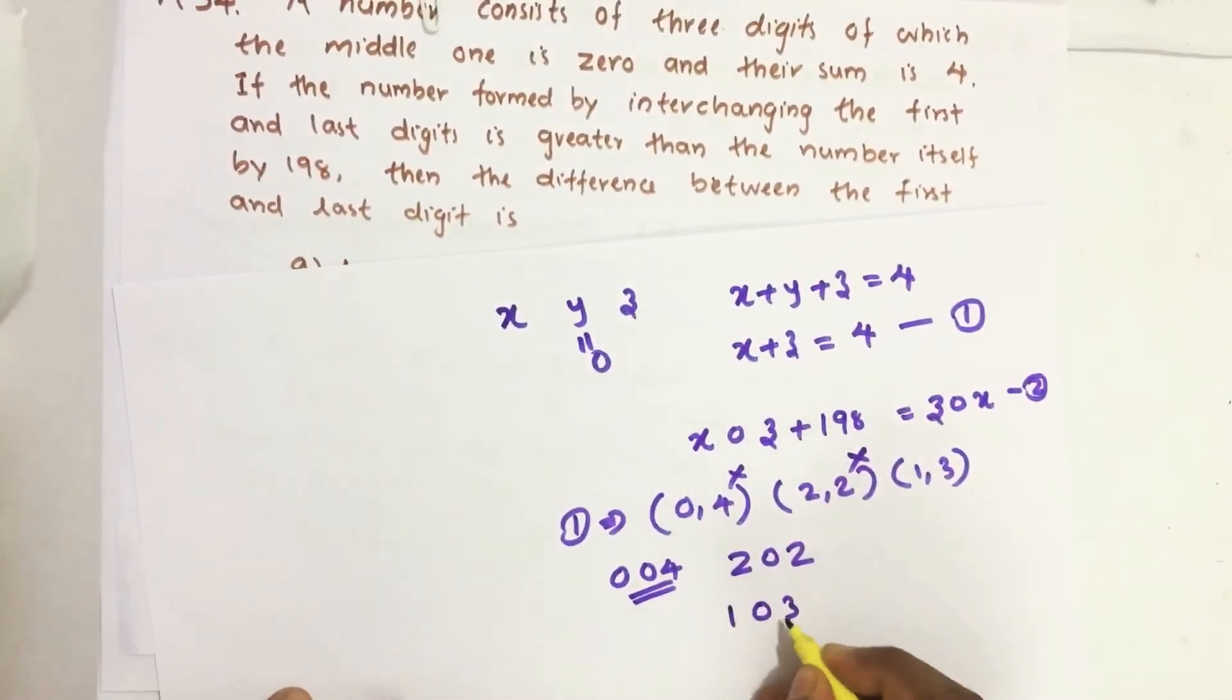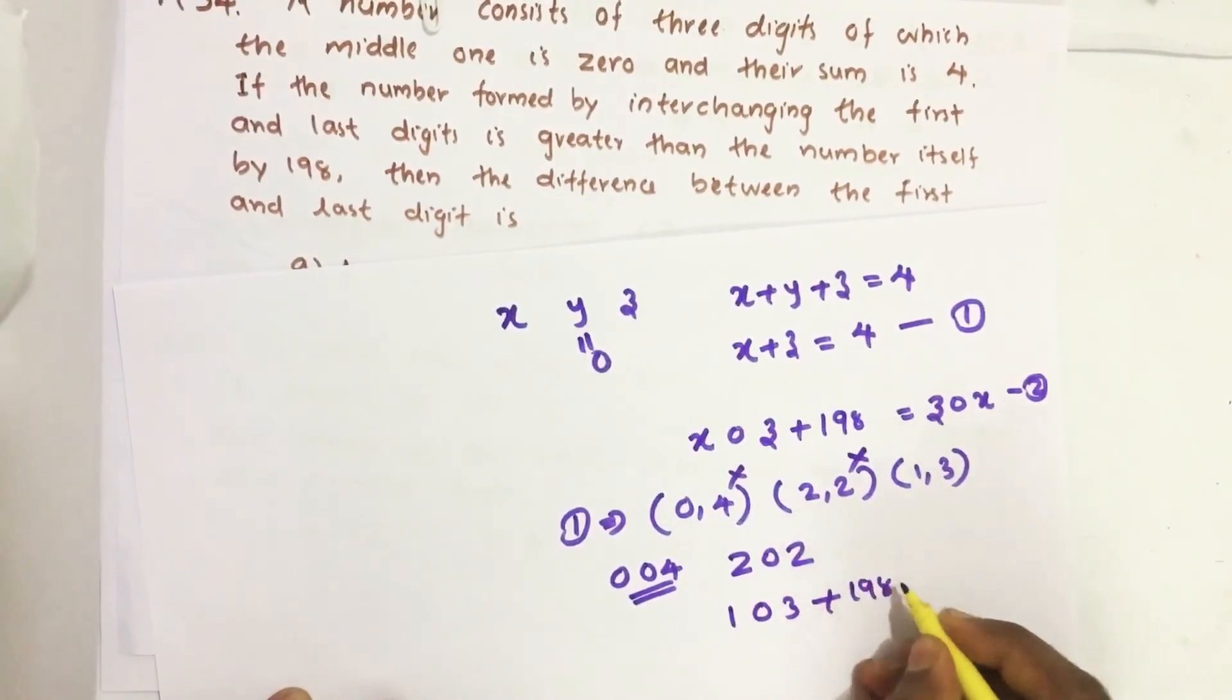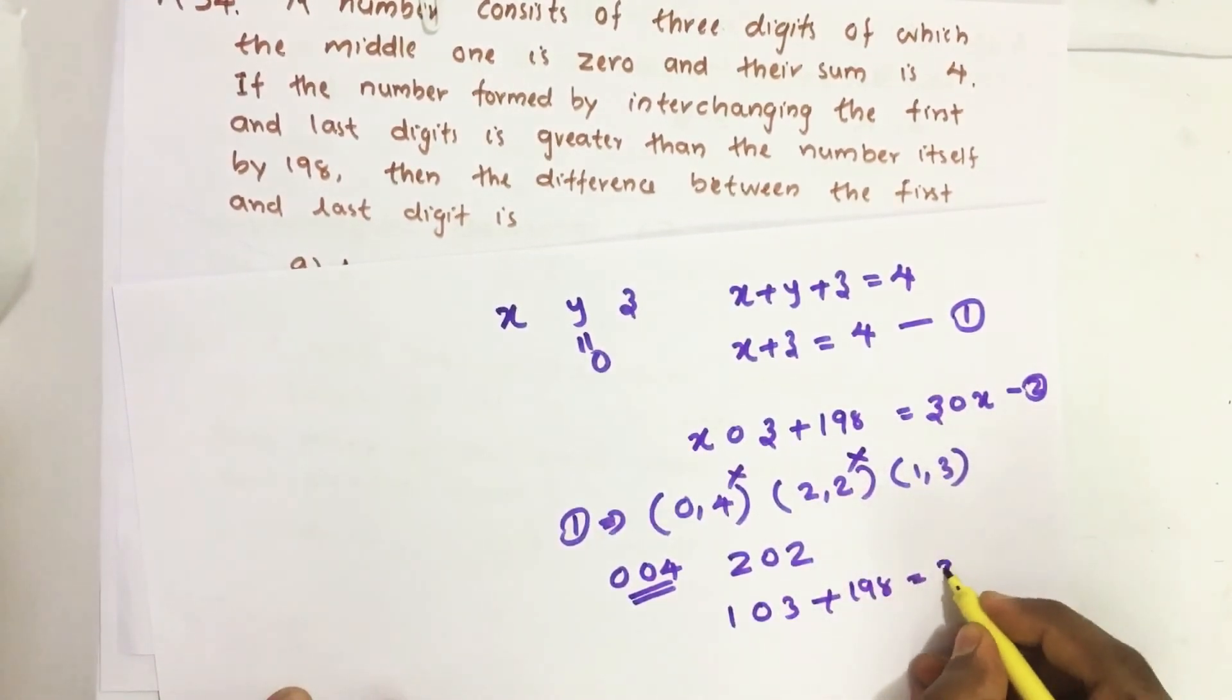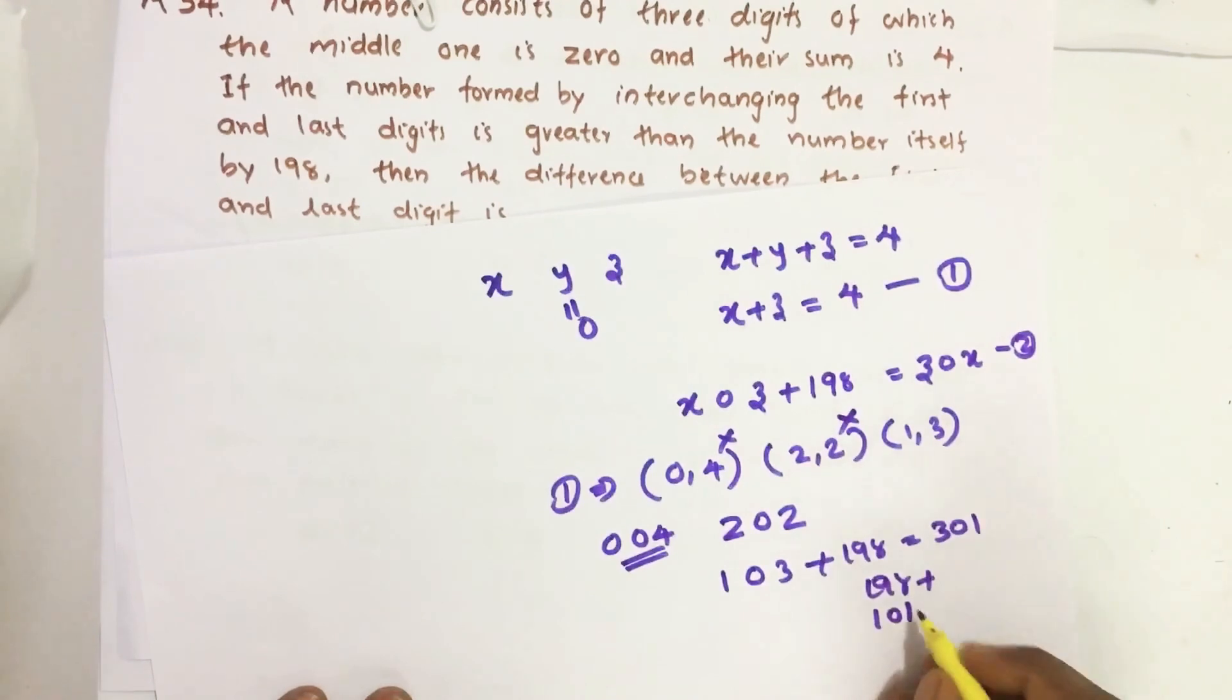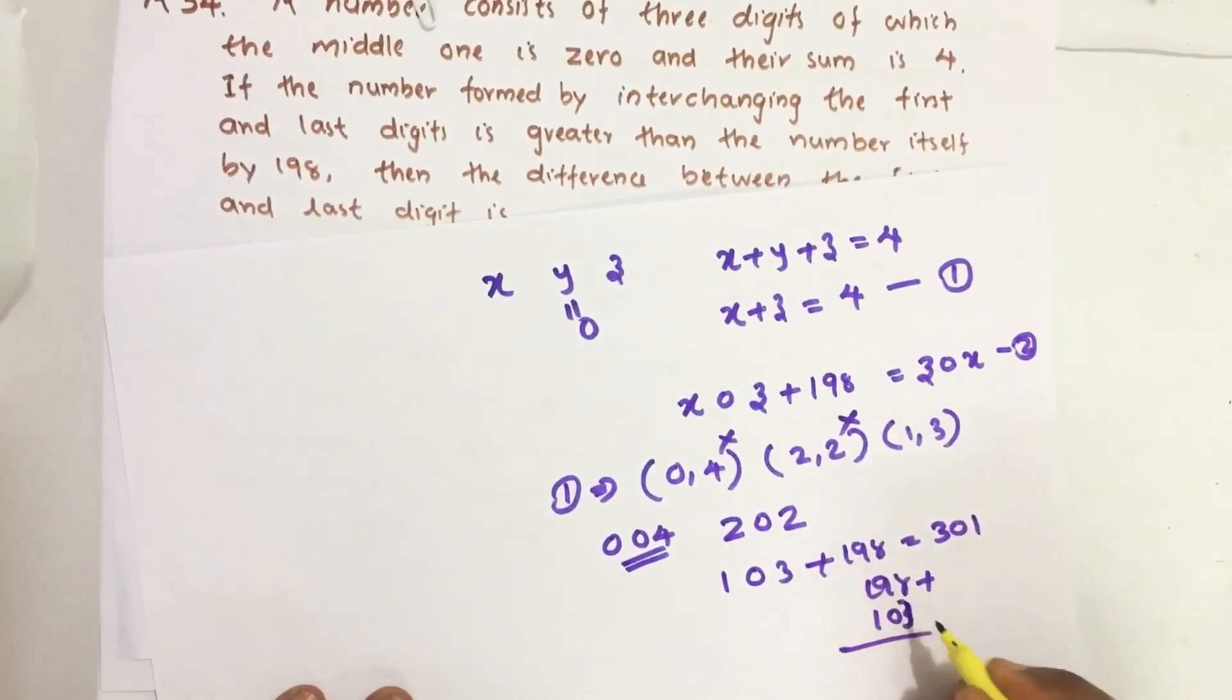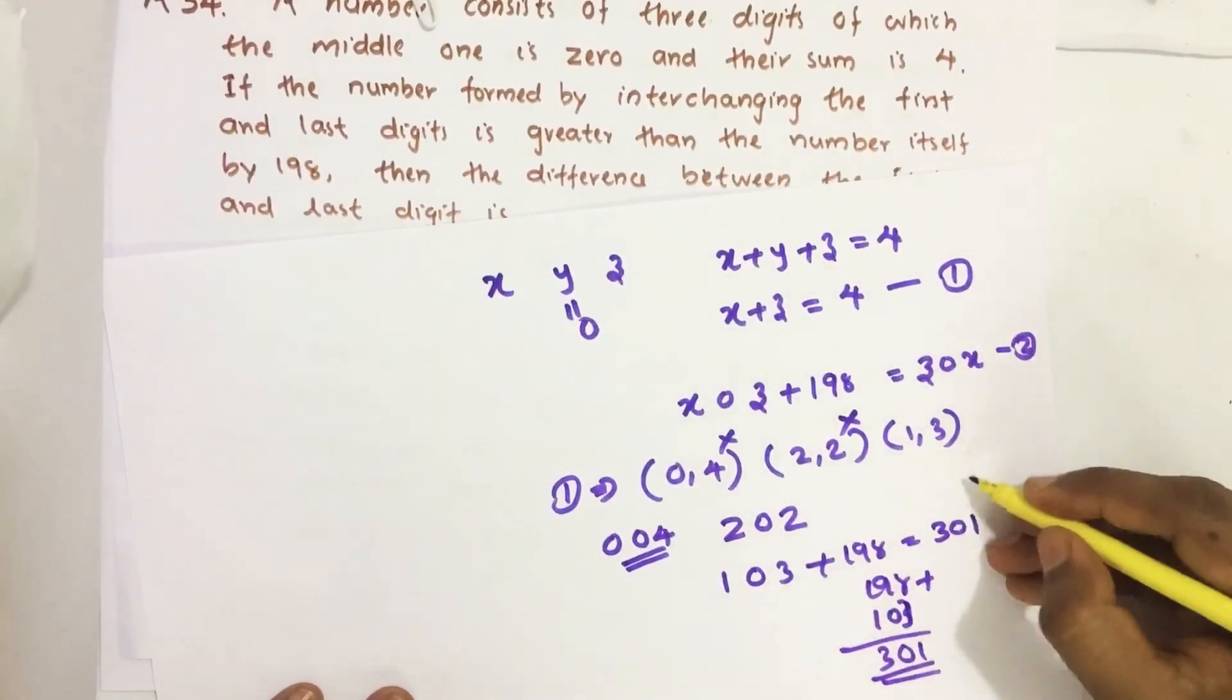103 plus 198 should equal 301. Let us see, 198 plus 103... 1, 0, 3. It is 3 plus 8, we get 301. So, it is satisfying.